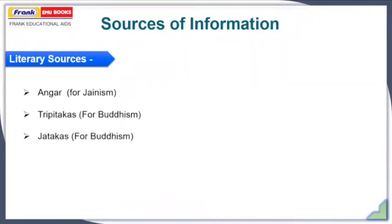Getting started with the sources of information. The sources of information can be categorized into two parts: literary sources and archaeological sources. In the literary sources, we have three voluminous texts. First is Anga, which is associated with Jainism. And the rest two, Tripitakas and Jatakas, are associated with Buddhism. In the Tripitakas, this epic has three textbooks: Sutta Pitaka, Vinaya Pitaka, and Abhidhamma Pitaka. These three textbooks are very important to have a know-how about Buddhism.